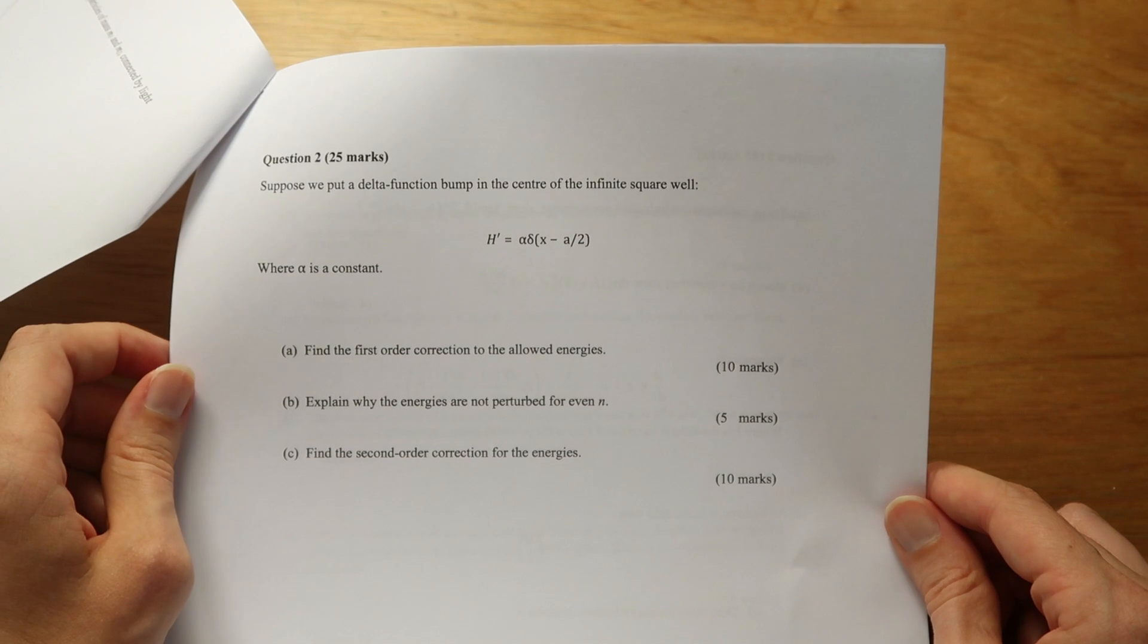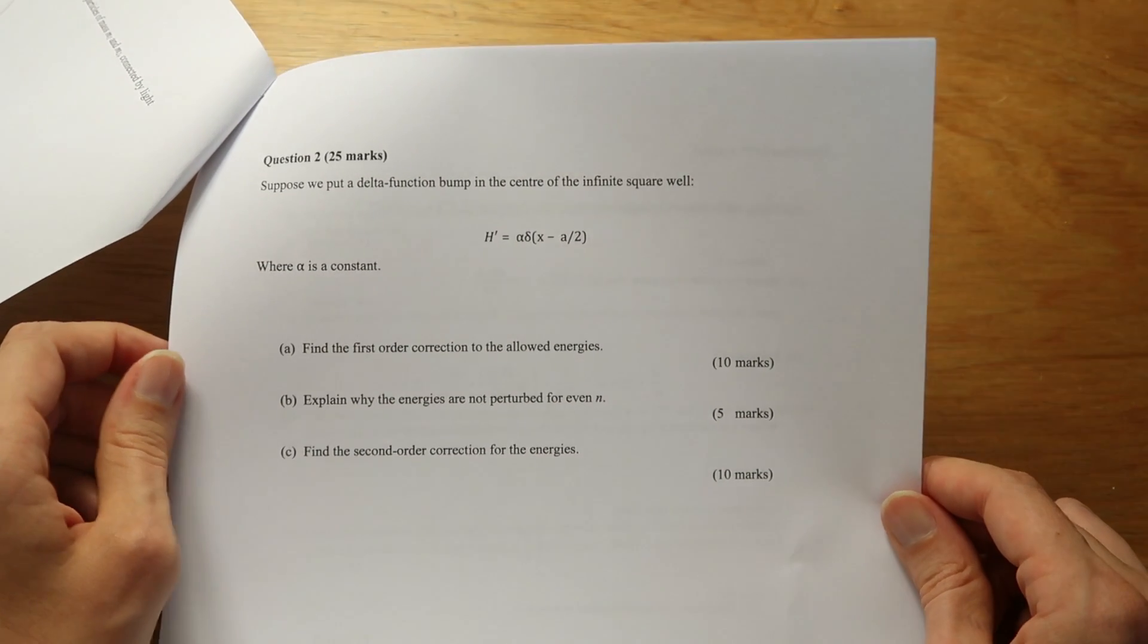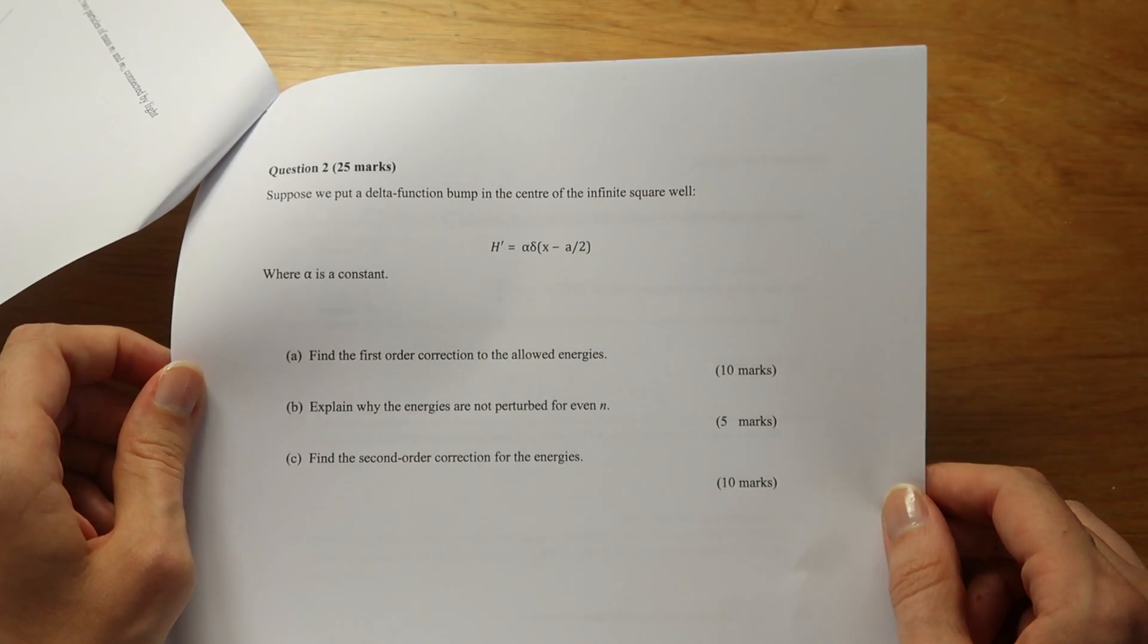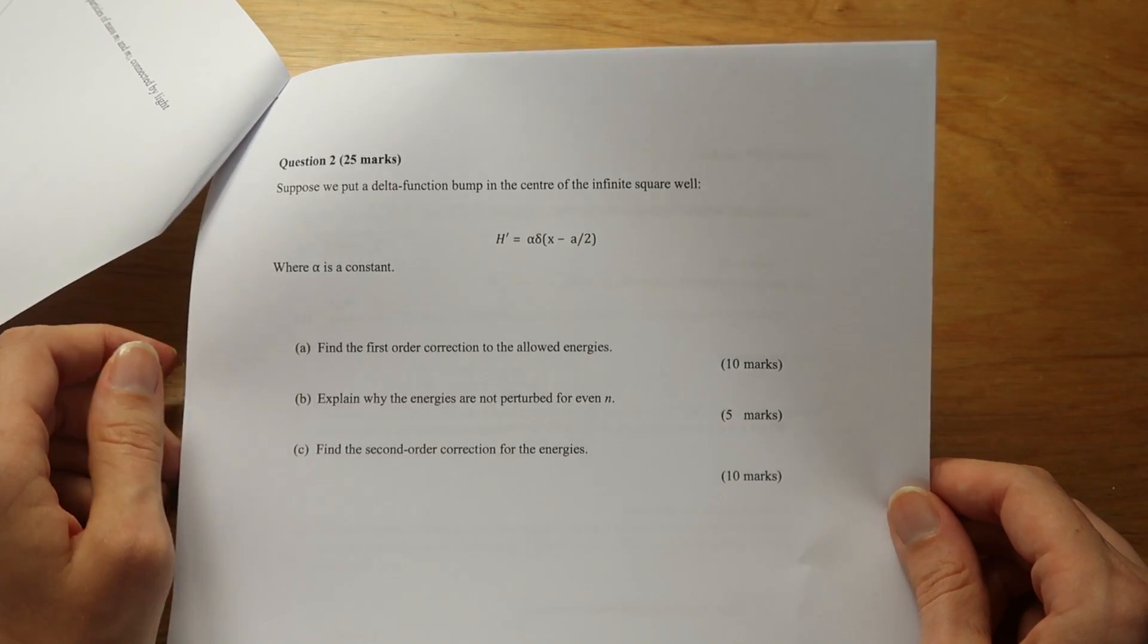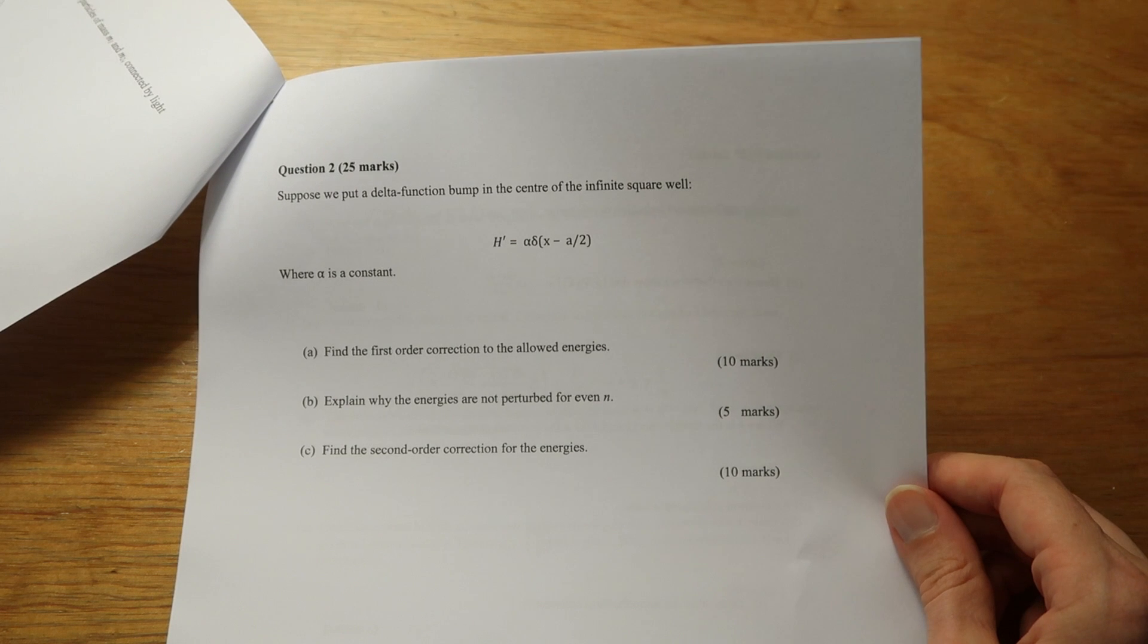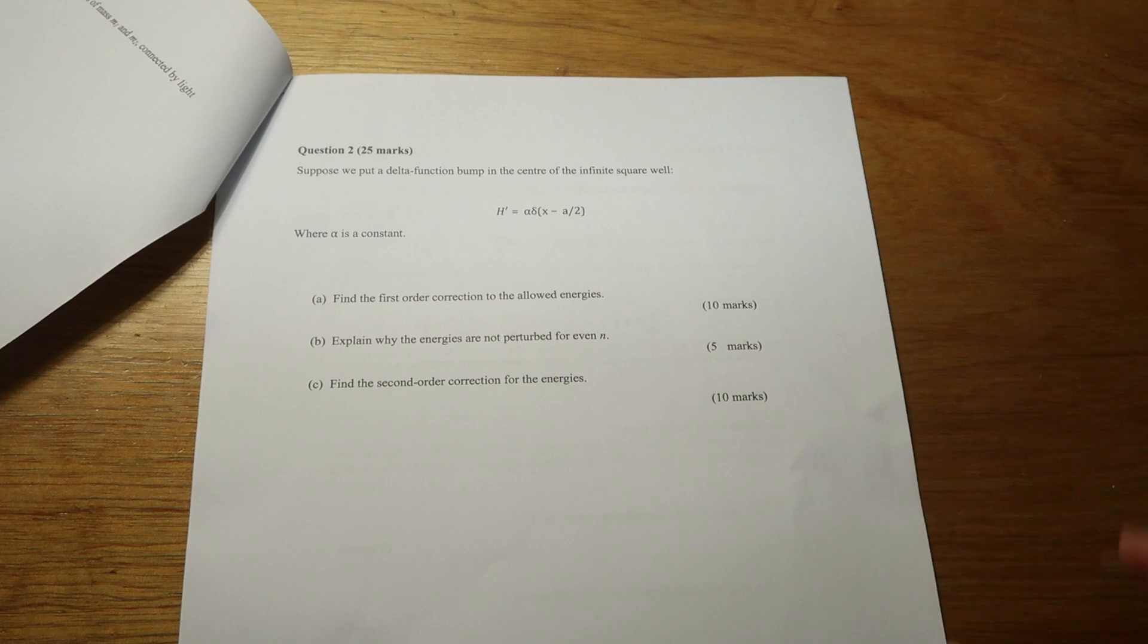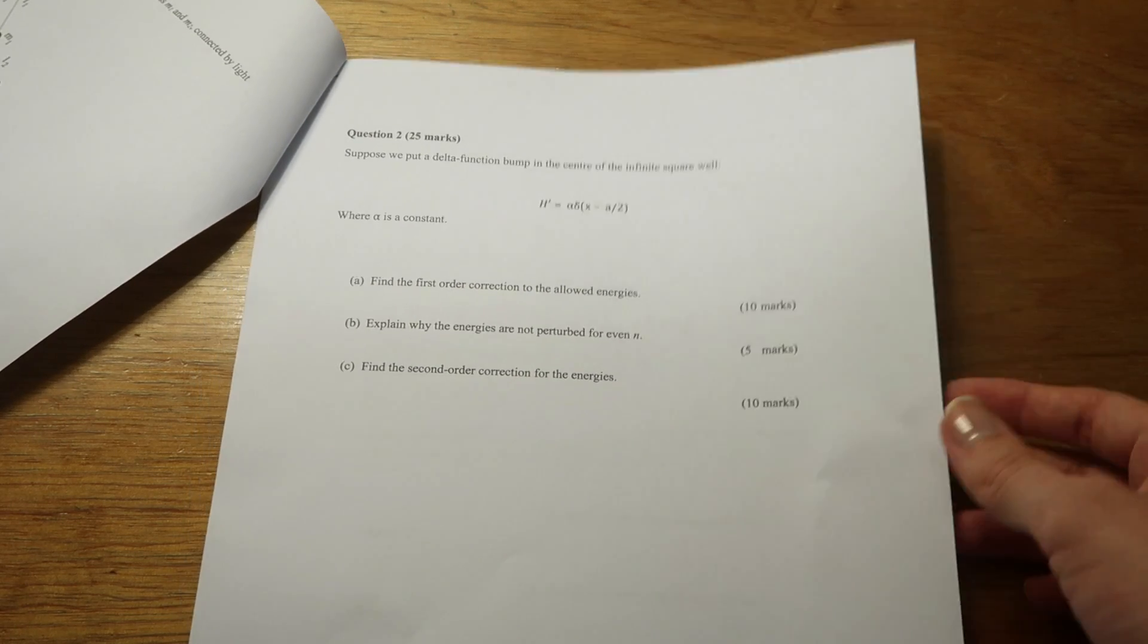Now often when you work with quantum mechanics problems, you're dealing with say a particle in an infinite square well, but perturbation theory deals with if there is a sort of blip or a bump, a perturbation in that square well, so it's no longer just a perfect square. Have a look in the description and I will link the solution here of how to do this.